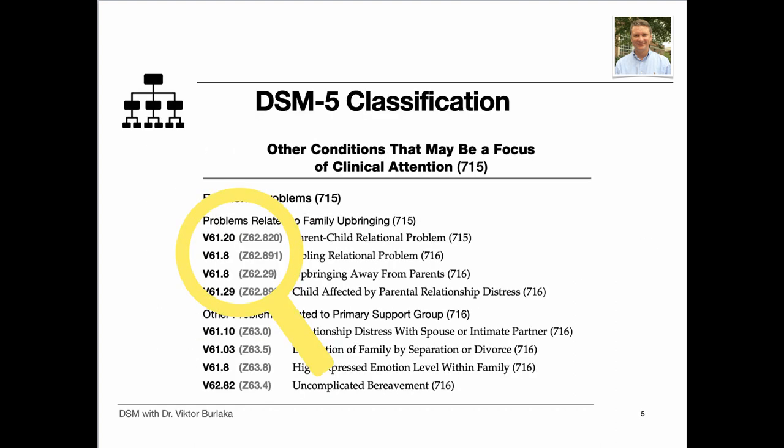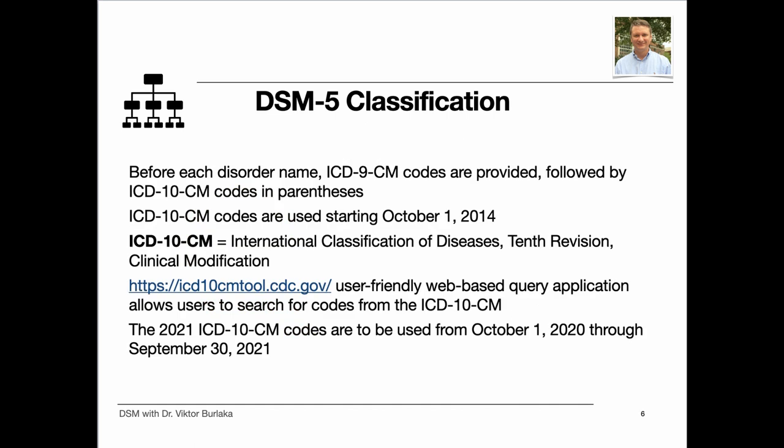You can see disorder codes before each disorder name. ICD-10-CM stands for International Classification of Diseases, Tenth Revision, Clinical Modification. The ICD-10-CM is copyrighted by the World Health Organization (WHO), which owns and publishes the classification. WHO has authorized the development of an adaptation of ICD-10 for use in the United States for U.S. government purposes. You can follow the link on the slide if you need to search for particular codes.